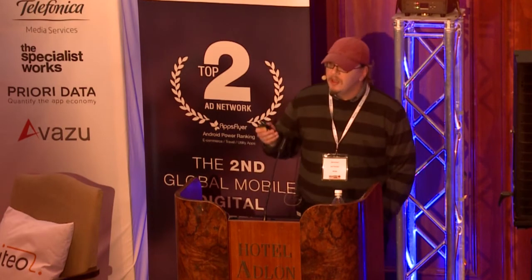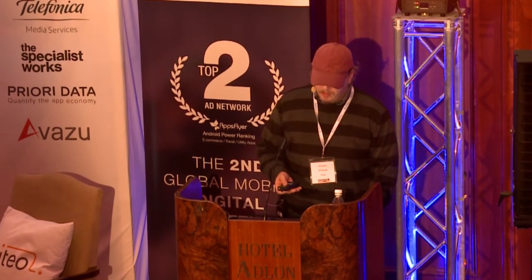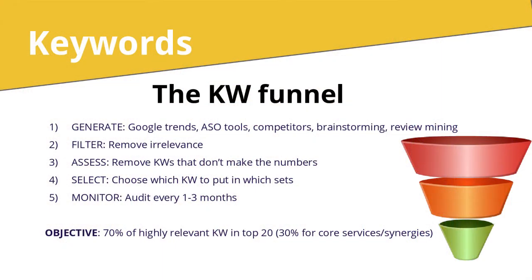How do you create these keywords? It's a standard five-step process: generate 100, 200, or 300 keywords, then filter those by relevance using tools like SensorTower or MobileDevHQ. You then select which keywords go into which category, splitting the stronger ones from the weaker ones. After your initial month or six weeks, audit that every one to three months — it doesn't necessarily need to be big changes, just checking this stuff.